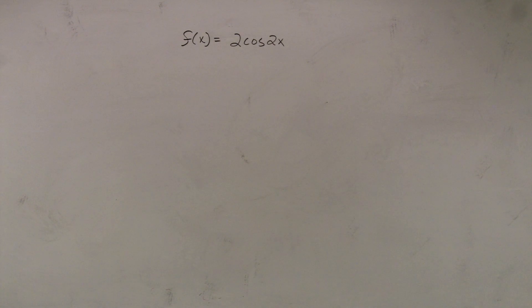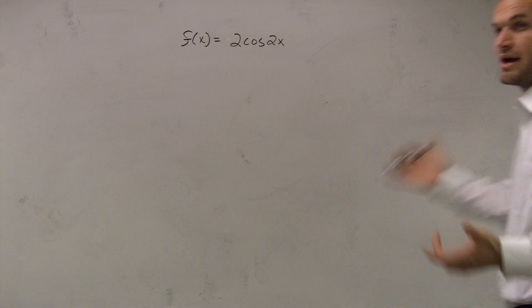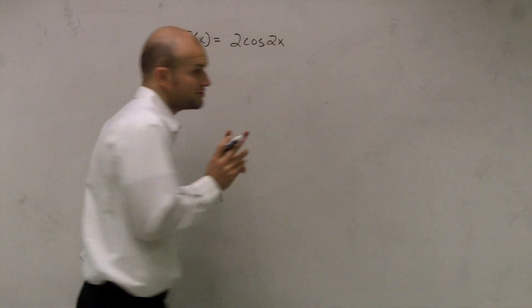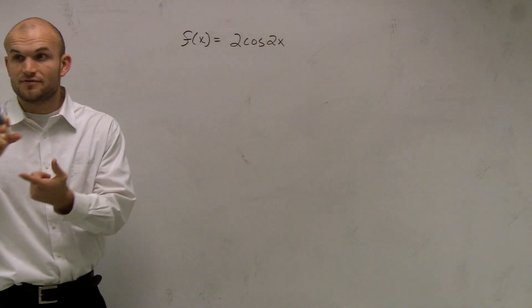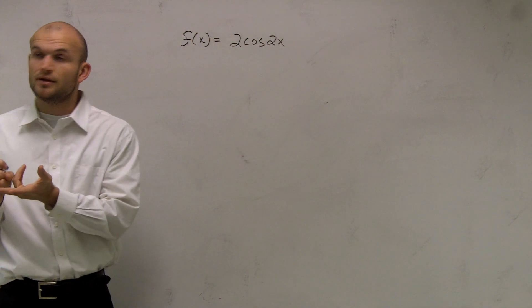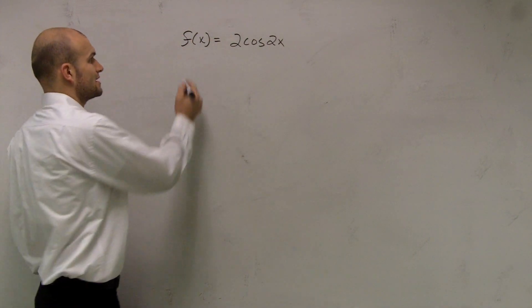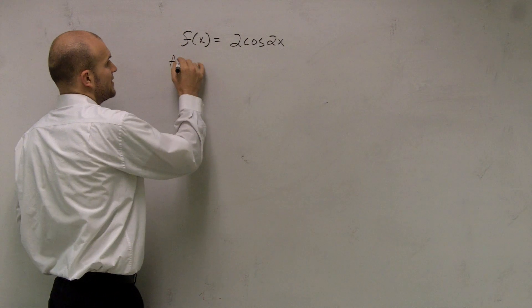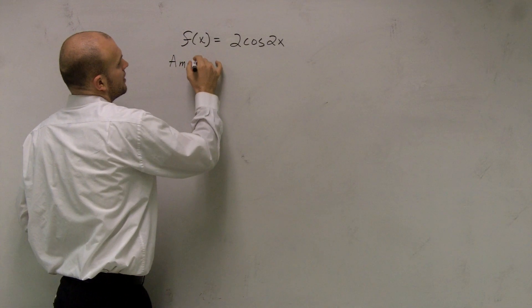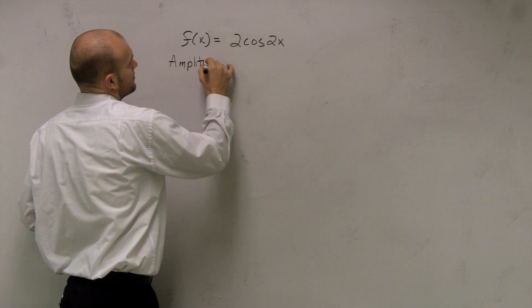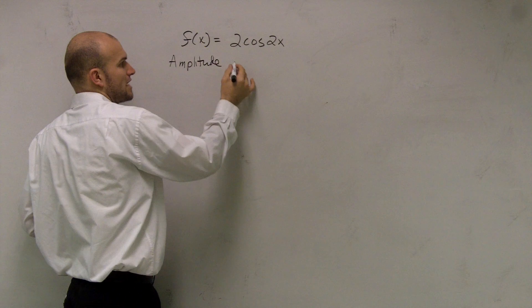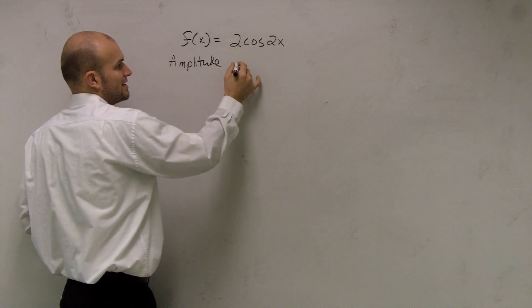There are a couple things we need to remember when graphing our sine function. The first two things are figuring out what the amplitude and what the period are. Now the amplitude is fairly simple — it's going to be the absolute value of A.